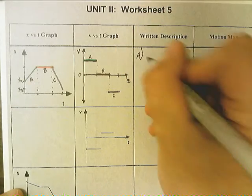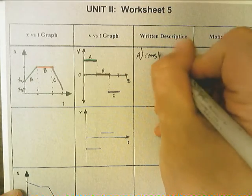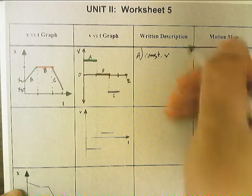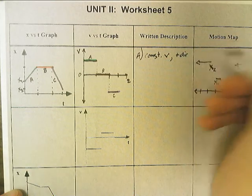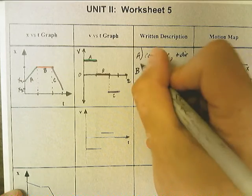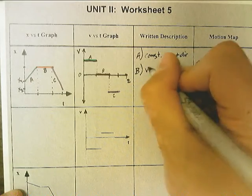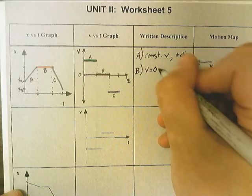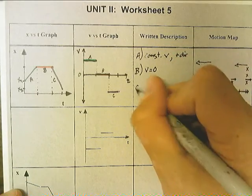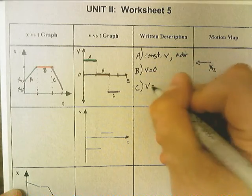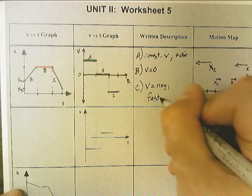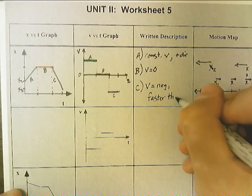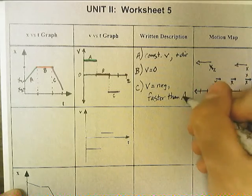Leg A is constant velocity, positive direction. Leg B, the velocity equals zero. C, the velocity is negative and faster than leg A.